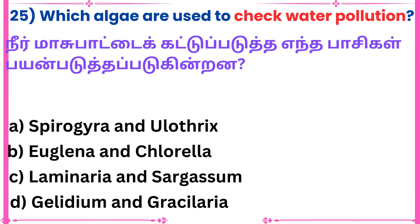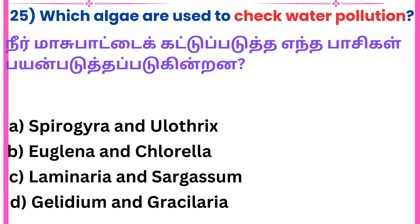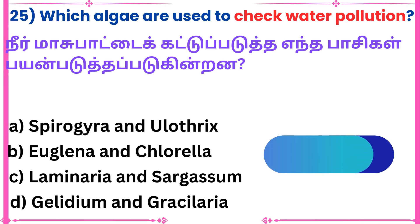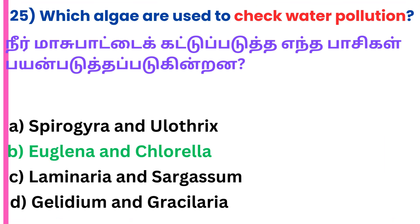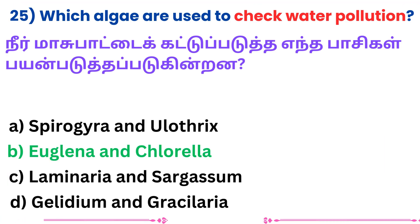25th question: Which algae are used to check water pollution? Answer: Euglena and Chlorella.